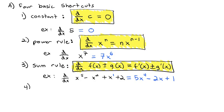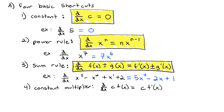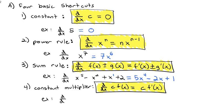The final basic shortcut is the constant multiplier, which says if I'm taking the derivative of some constant times a function, we keep that constant in front and multiply it by the derivative of that inside function. That is the fourth basic shortcut. For example, if I wanted the derivative of 3x to the fifth minus 2x to the fourth plus 5x squared minus 7x plus one.